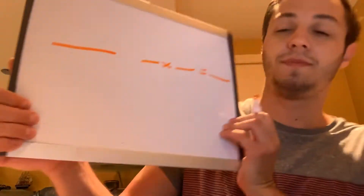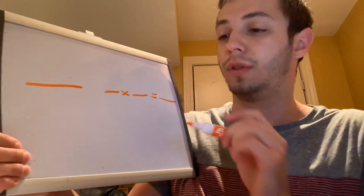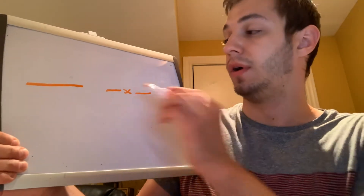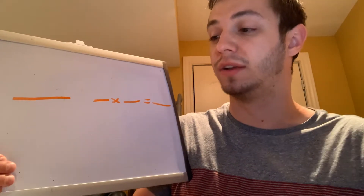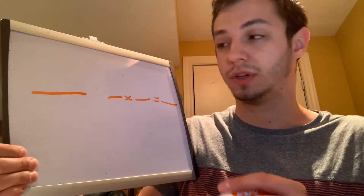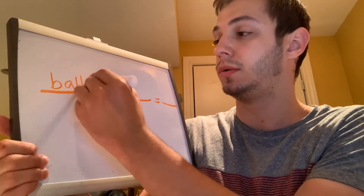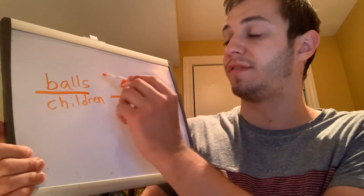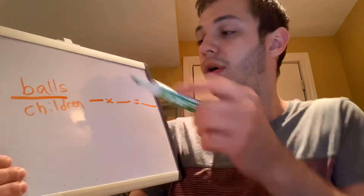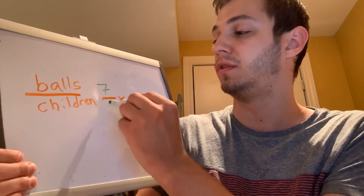The problem tells us that there are seven balls for every 10 children. If there are 50 children, how many balls are there? In our first blank we're going to write the two things that we're comparing, and then we're going to write our three fractions. We're comparing how many balls there are per children, so we're going to write balls and children. There are seven balls for every 10 children, so that will be our fraction for the first blank: seven balls per 10 children.